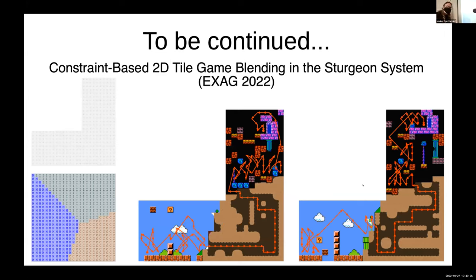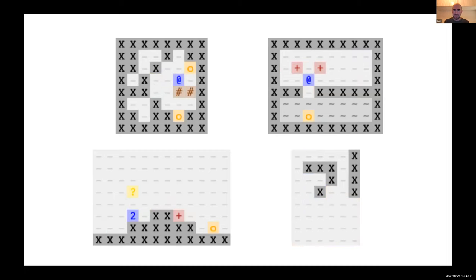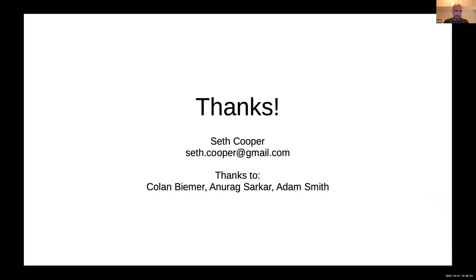Sorry to interrupt. I was just going to say that I gave an EXAG talk a couple of days ago about once you have the constraints, you can mix and match from different games and interesting combinations. I've also been currently looking at expressing the mechanics of the game other than just movement as constraints and generating not just a level, but an example playthrough that shows that the level can be beaten in a bunch of different kinds of games. So that's it. Thanks. I don't know if we have time for questions.